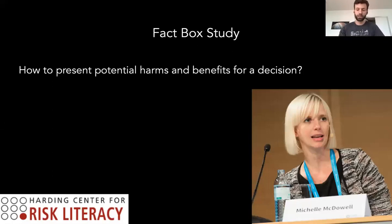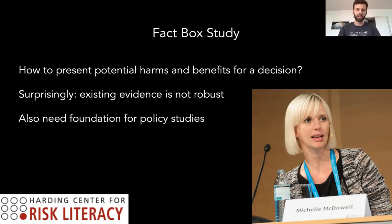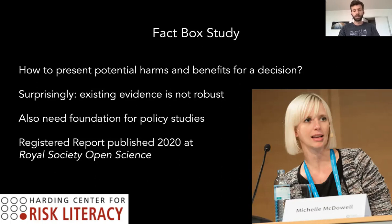The last section covers a recent published study about how to present potential harms and benefits. One collaborator is Michelle McDowell at the Harding Center for Risk Literacy in Germany. It was surprising that existing evidence for how to present harms and benefits for decisions is not very deep, even for such an important topic. This foundation is also needed so we can run policy studies including those difficulties identified in the review — like different effects on different subgroups.